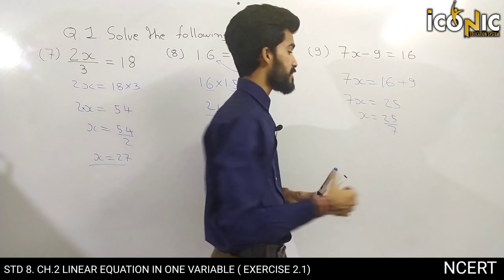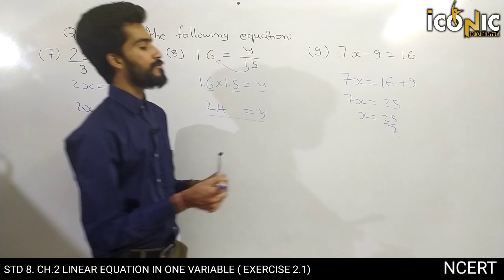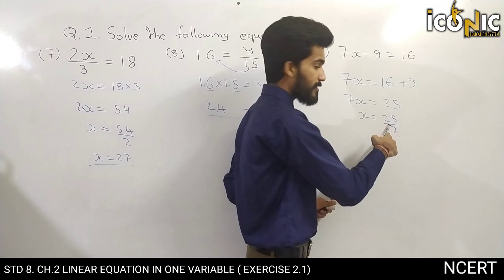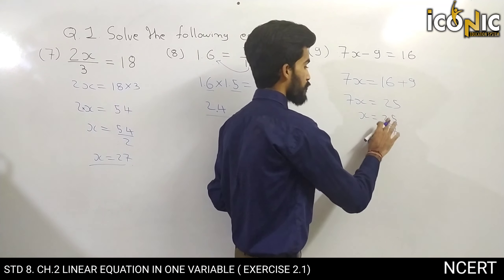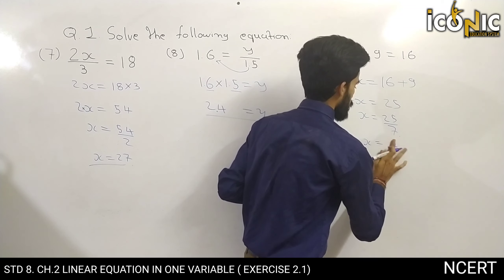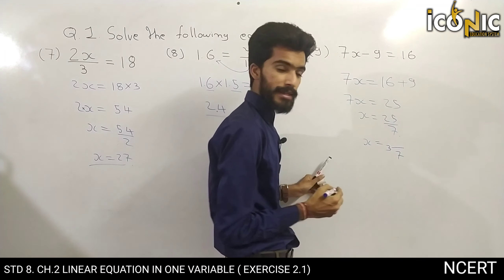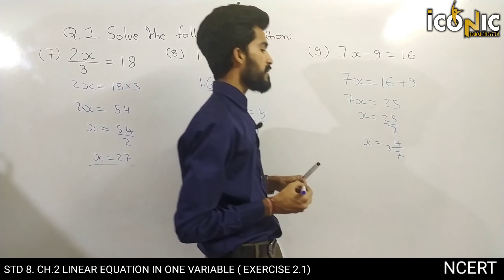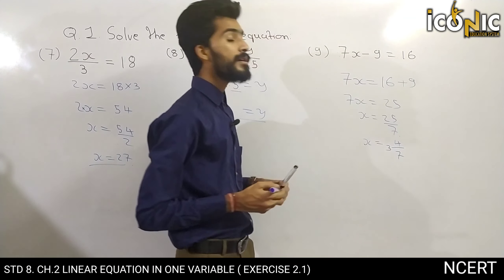This is our answer. Since 25 by 7 cannot be simplified further, we write it as a mixed fraction. 7 times 3 is 21, and 21 plus 4 is 25, so x is equal to 3 and 4 by 7 as a mixed fraction. Now we move to the next example.